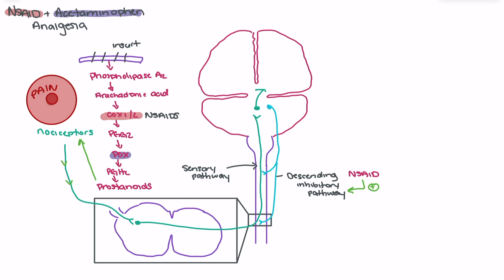So when we look at NSAIDs, they're targeting the COX-1 and 2 pathway and blocking the ability of pain to be created through the production of prostanoids. And we're also seeing NSAIDs activating that descending inhibitory pathway, which reduces the ability to have ascending transmission of pain signals to the brain.